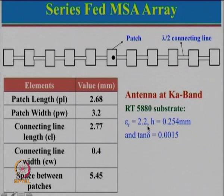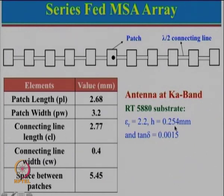Millimeter wave has good applications - small size and very fast data rate. The Ka-band antenna was designed on a substrate of just 0.254 mm thickness. This is a very thin substrate that must be handled carefully to avoid bending or warping. Such small thickness is required because h should be less than 0.06 lambda, and at Ka-band lambda is very small.